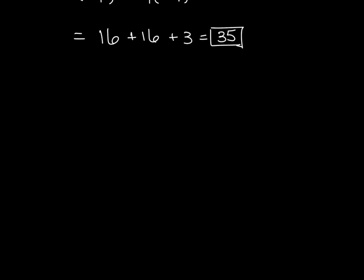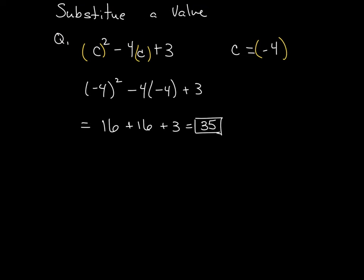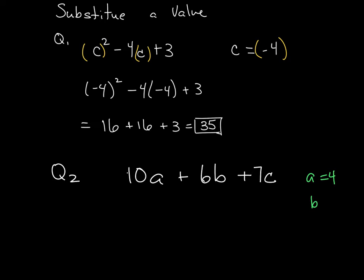Question two is very similar, but now we have several different variables. I am given the statement that I have 10a plus 6b plus 7c. And then I am also told that a is equal to 4, b is equal to negative 5, and c is equal to 3. And again, remember, think of all of these as being parentheses. That's probably the biggest advice I can give you when you're putting those in.